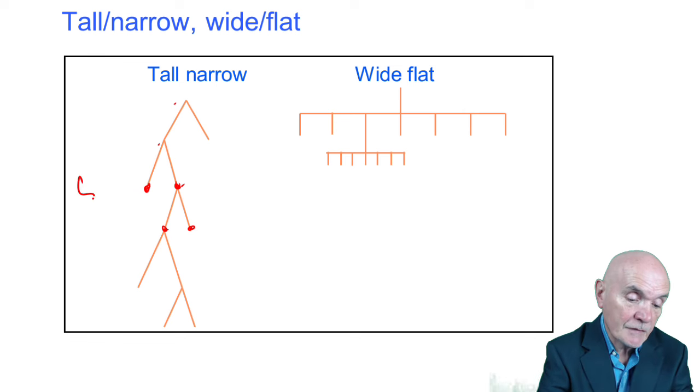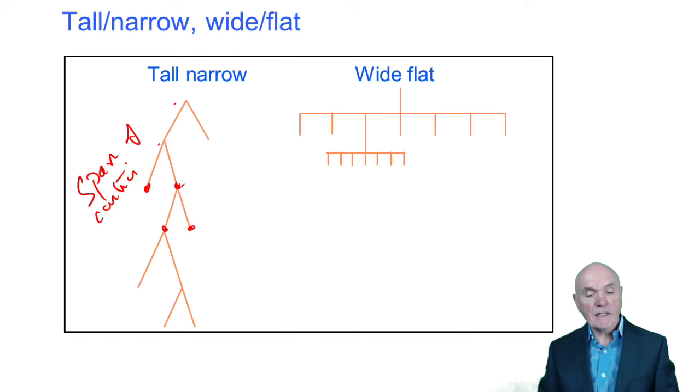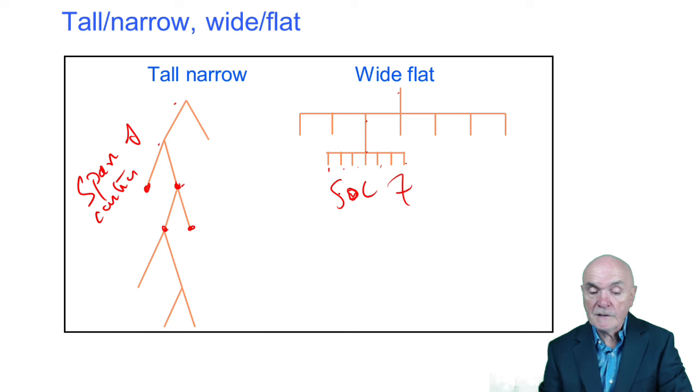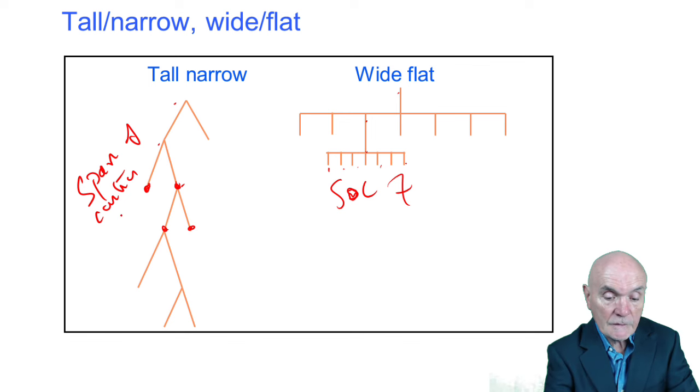So every manager is looking after two people. The wide flat, it's got many fewer layers. But the span of control, but here's one, two, three, four, five, six, seven. Span of control is the number of people reporting directly to you. Here the span of control was two.